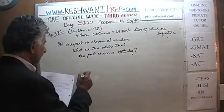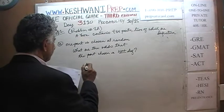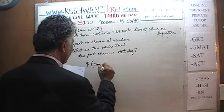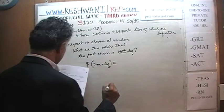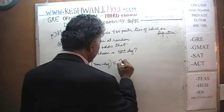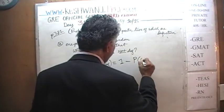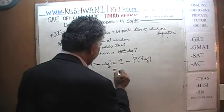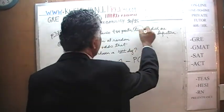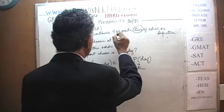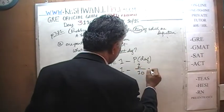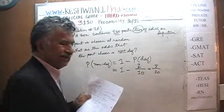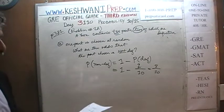We are looking for the probability of having chosen a non-defective part. The probability of choosing a non-defective part is simply 1 minus the probability that we choose a defective part. There are two defective parts out of 10, which means there must be 8 non-defective parts out of 10. So the answer is 8 out of 10.